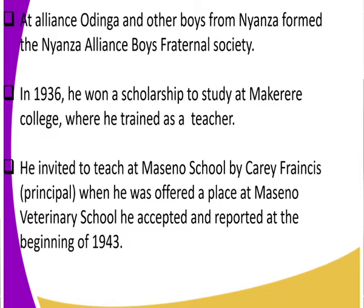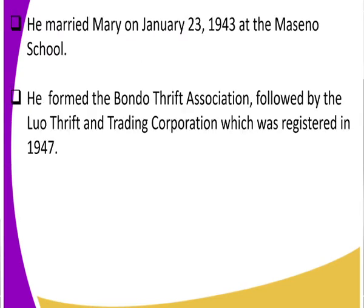He was then invited to teach at Maseno School, his former school, by the principal Carey Francis. He accepted and reported at the beginning of 1943, so his teaching career started in 1943. He married Mary on January 23, 1943 at Maseno School. He then formed the Bondo Thrift Association, followed by the Luo Thrift and Trading Corporation, registered in 1947.